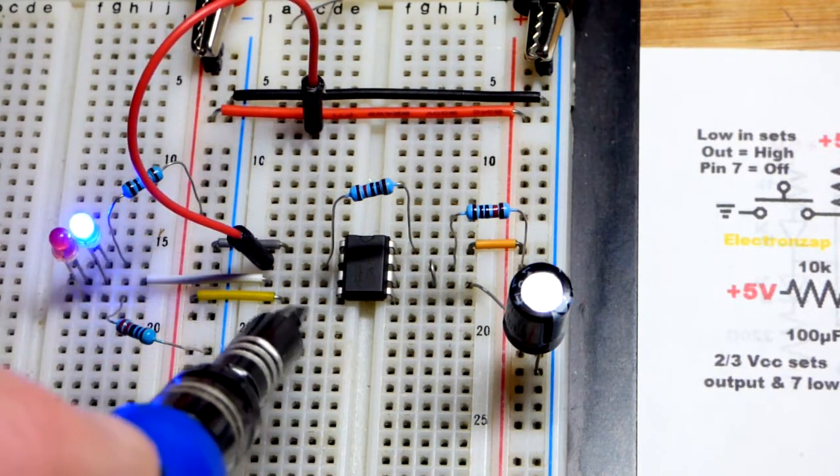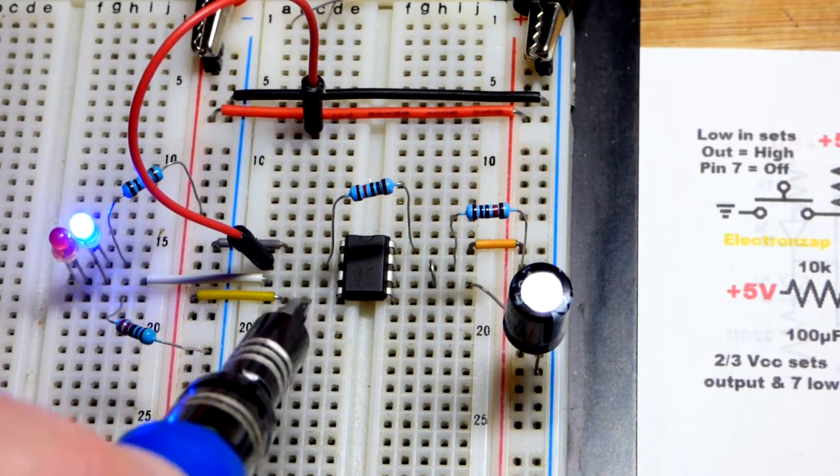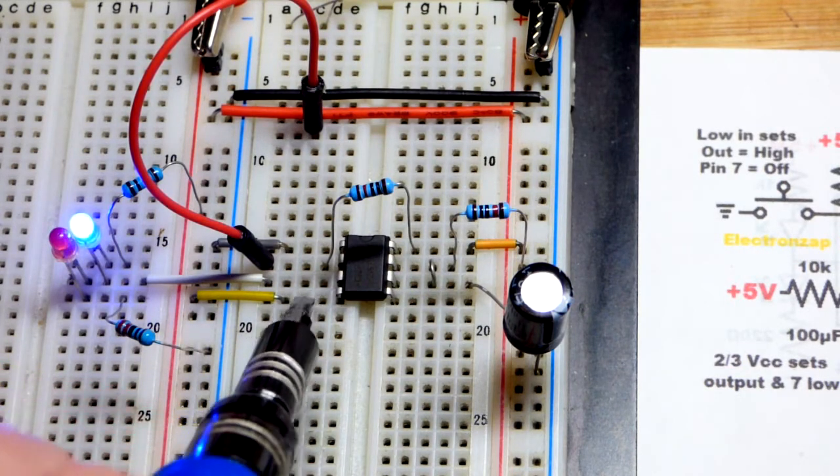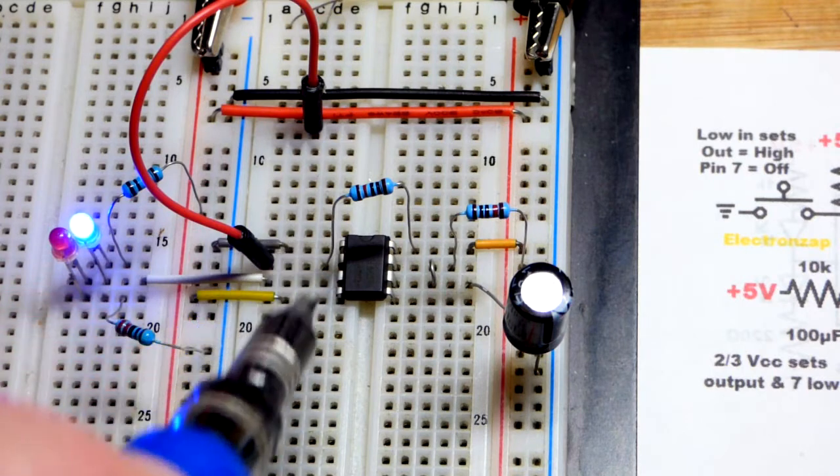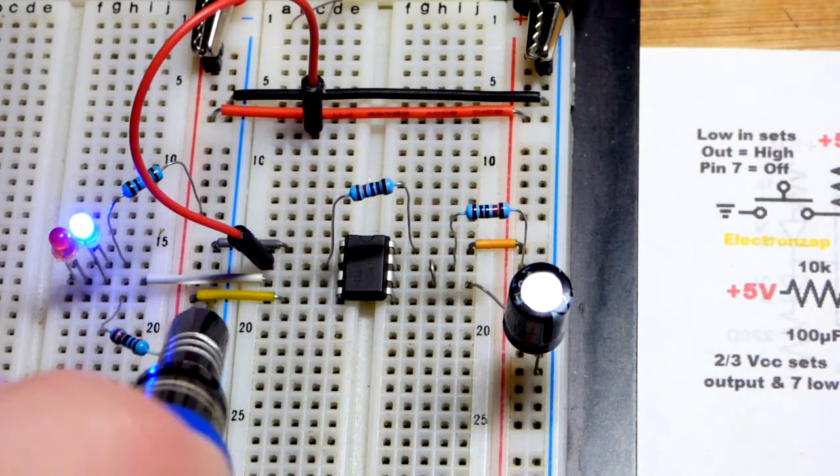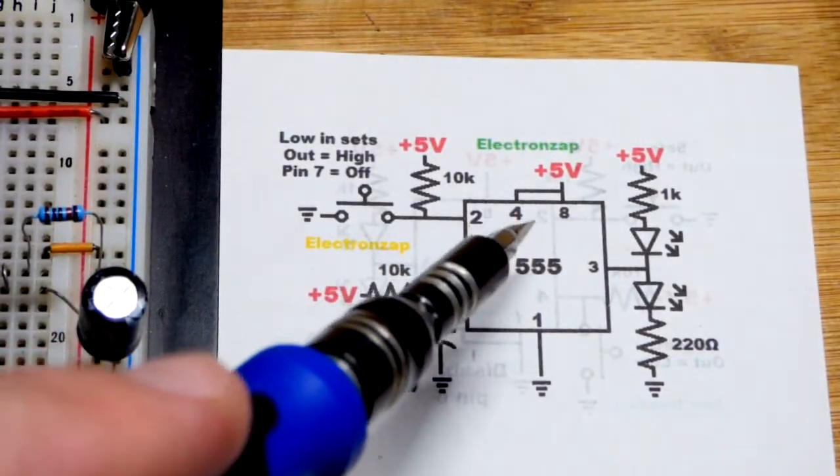Pin number 4, as we said before, that's the reset pin. It's waiting for a low input, basically a connection to ground for the most part, just like pin number 2 is. We don't want it to do anything. We don't want it to reset in the circuit, so we just put it to the positive supply, and that disables it.